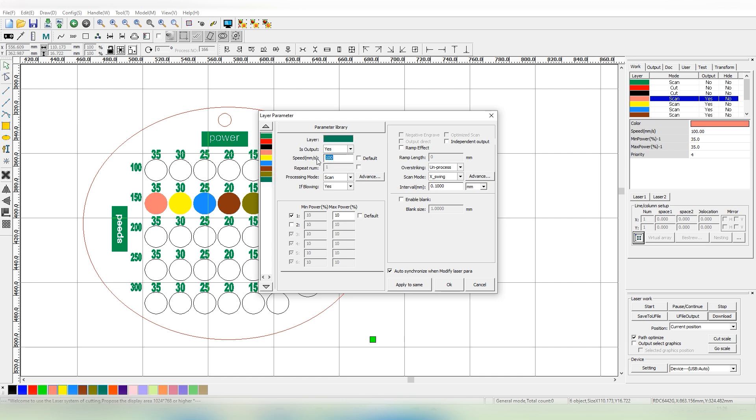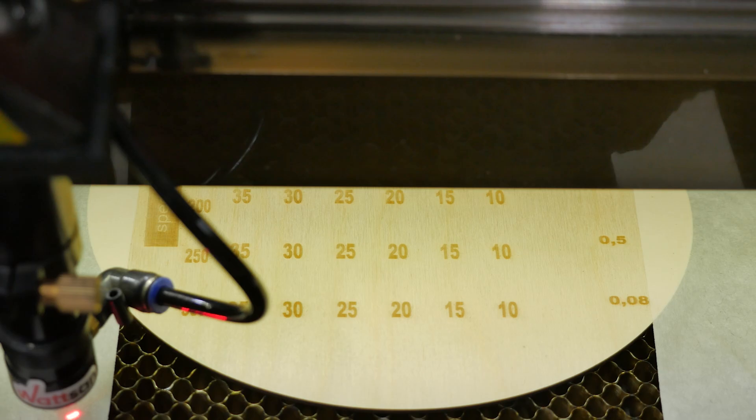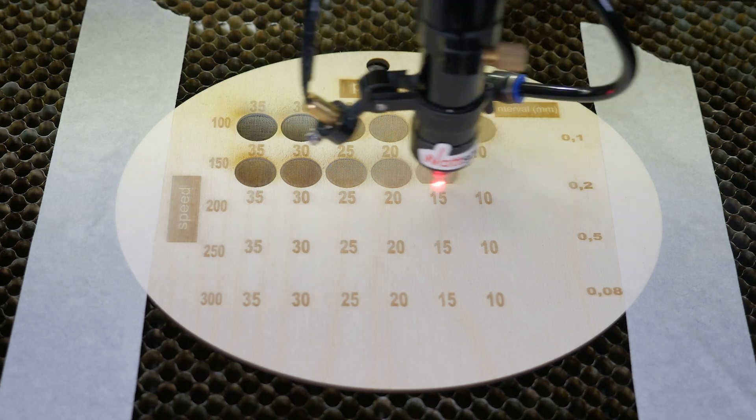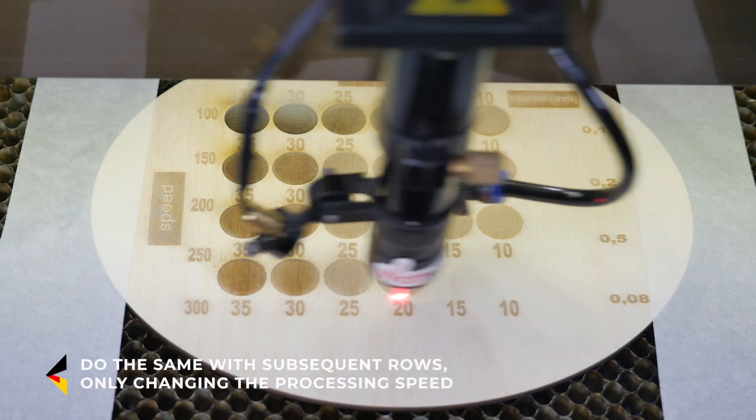Change the color of the entire upper row of squares to a color that will not be processed, which in this example is black or green. Press download, check the processing edges, and start the engraving process. Do the same with subsequent rows, only changing the processing speed.